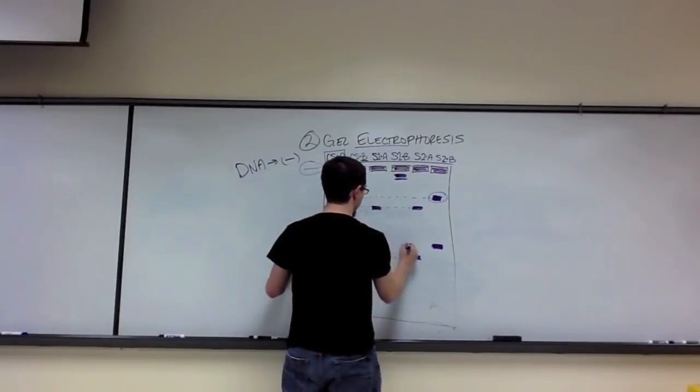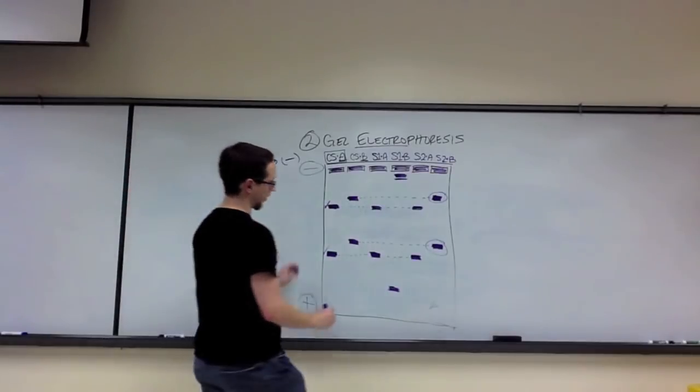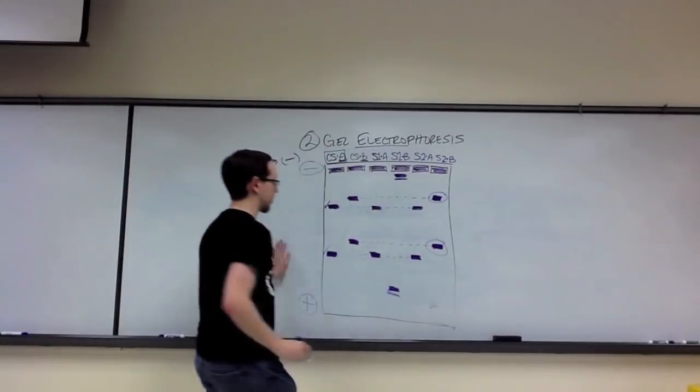And when we cut with B again, we only match suspect 2's because suspect 1's is way down here.